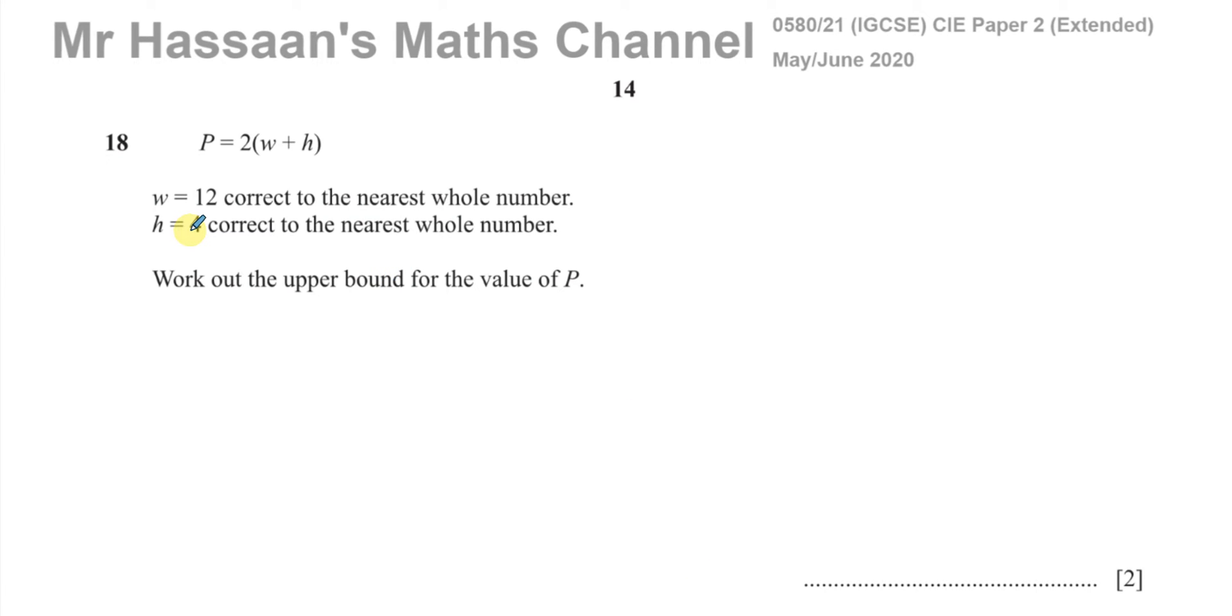Okay, welcome back. Now we're on question number 18 from this May-June 2020 International GCSE Cambridge Paper 2, which is variant 2.1 from that year. And this question here is about upper and lower bounds, well, upper bounds only here.